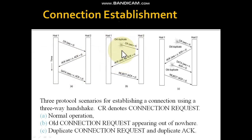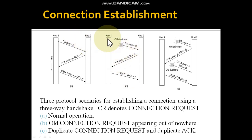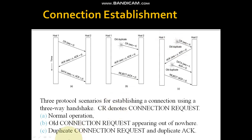But what if there is an old and duplicate connection request appearing out of order? In that case, the solution is to reject that request. Host 2 will reject the acceptance of data and send back a rejection acknowledgement.